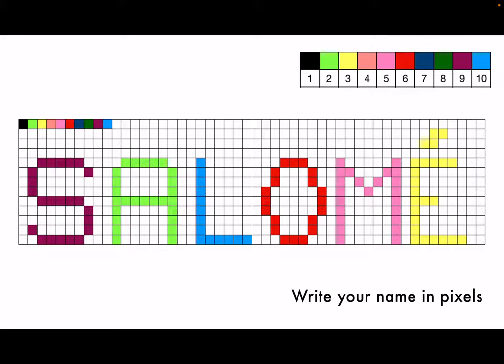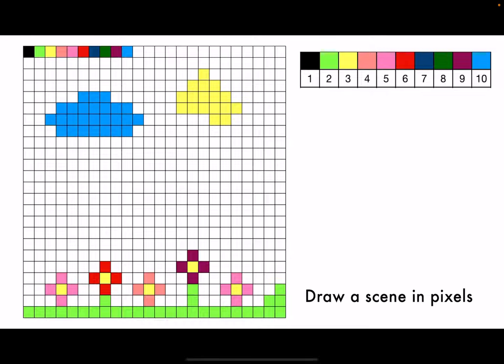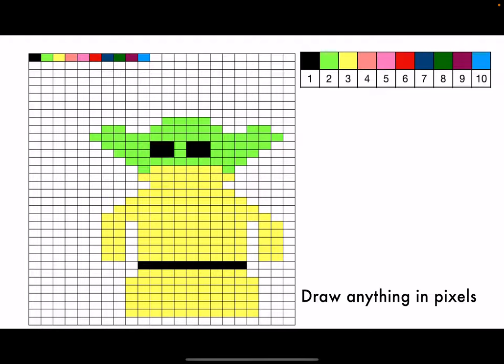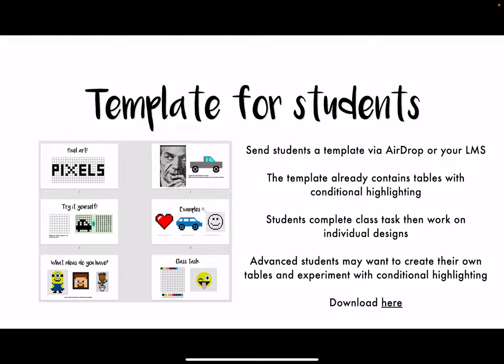Then students go on to the individual task, where they can really have fun — drawing their names, a scene in pixels, or really anything they like in pixel art. I create a template for the students which I send them via AirDrop or through their learning platform. This template already contains tables with conditional highlighting. For more advanced students, you may want to ask them to do an additional challenge of creating their own table with their own conditional highlighting. I've also provided a template link for download which you can freely use for your class.